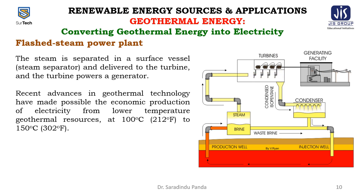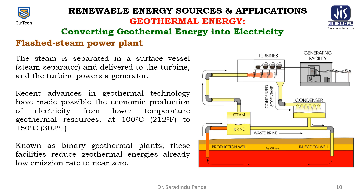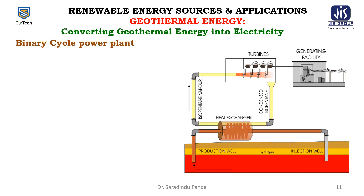Recent advances in geothermal technology have made possible the economic production of electricity from lower-temperature geothermal resources at 100°C to 150°C. Known as binary geothermal plants, these facilities reduce geothermal energy's already low emission rate to near zero. The third type is the binary cycle power plant.